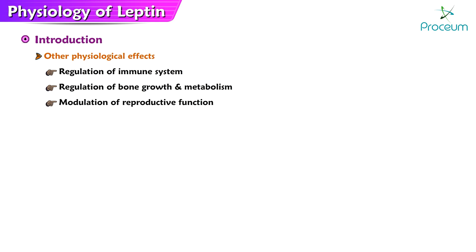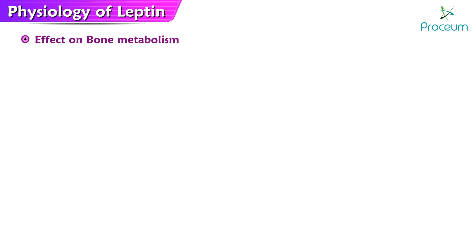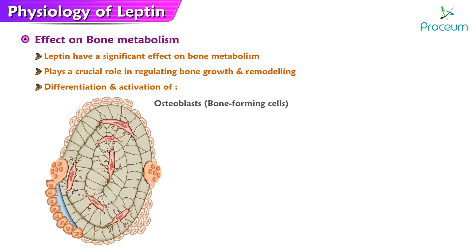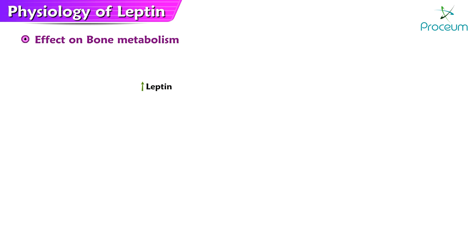Effect of leptin on bone metabolism. Leptin has been shown to have a significant effect on bone metabolism. This hormone plays a crucial role in regulating bone growth and remodeling, and has been shown to influence the differentiation and activation of bone-forming cells (osteoblasts) and bone-resorbing cells (osteoclasts). Studies have shown that high levels of leptin are associated with increased bone formation and reduced bone resorption, leading to